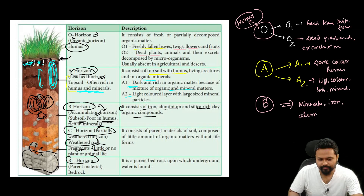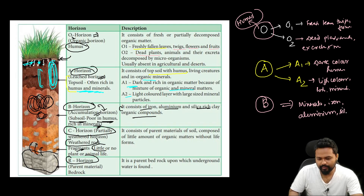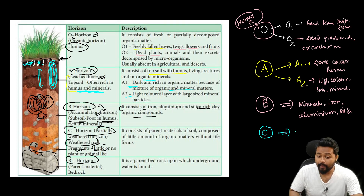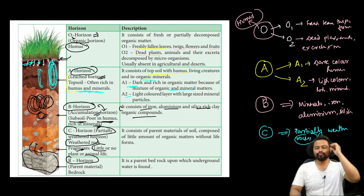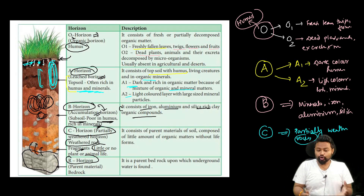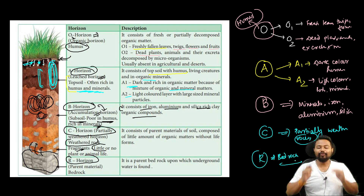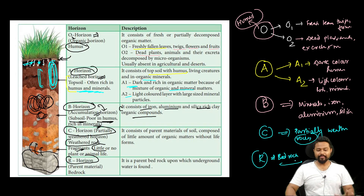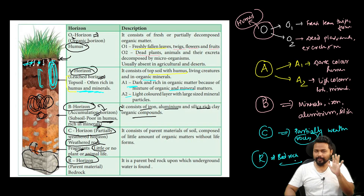Iron, aluminum, silica — these are components of the soil horizons. The R horizon is the bedrock. So the key soil profile layers are important to understand. Today's class ends here — we will meet in the next class. Thank you.